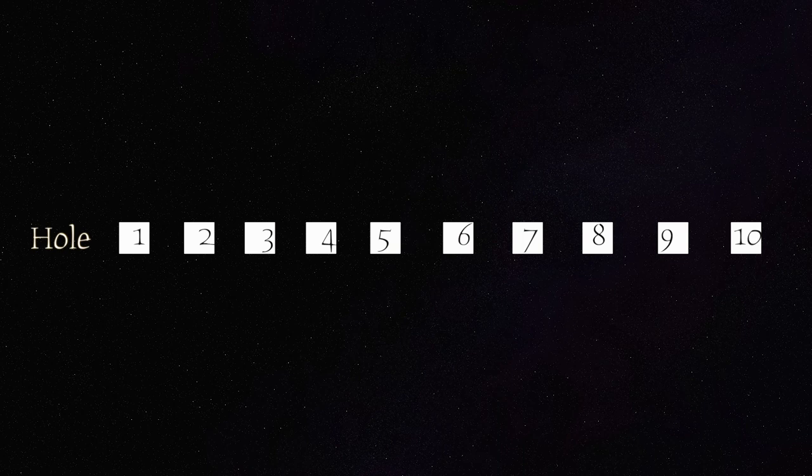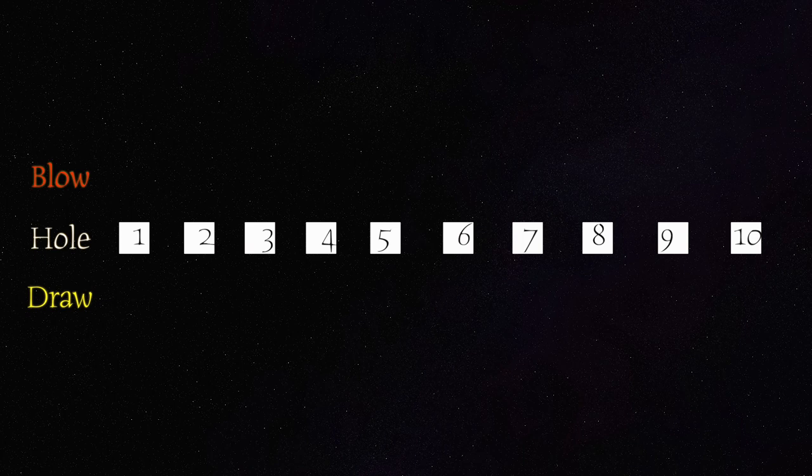So now I'll show you the harmonica layout. So as you can see, we have 10 squares, each square representing the hole of the harmonica. And then you can number them 1, 2, 3, 4, 5, 6, 7, 8, 9, 10. So that's your 10-hole C diatonic harmonica right there. Now we know that you can play a simple blow and simple draw. So you have 20 notes there. So what are those 20 notes?